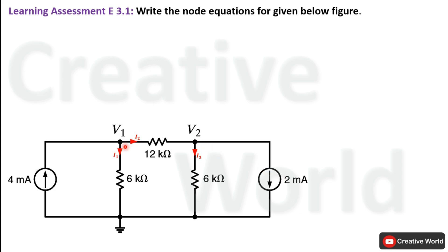We have marked all branch currents along with their assumed directions. If the actual current is opposite to these assumed branch currents, the value of that branch current will carry a minus sign, indicating the actual direction is opposite to the assumed direction. Now we will write Kirchhoff's Current Law equations for these two nodes.